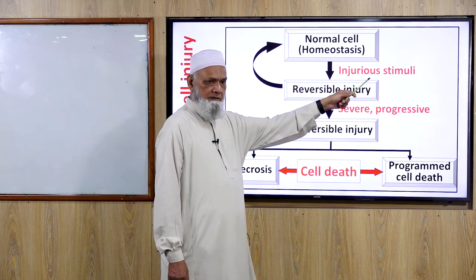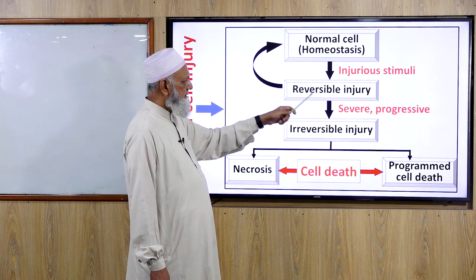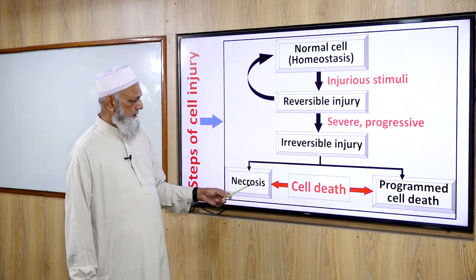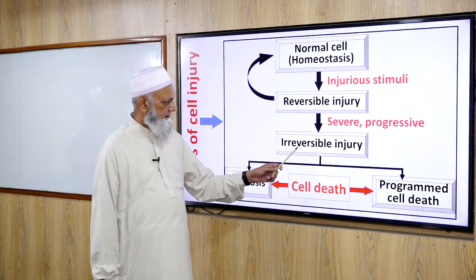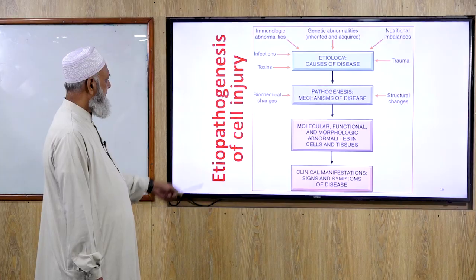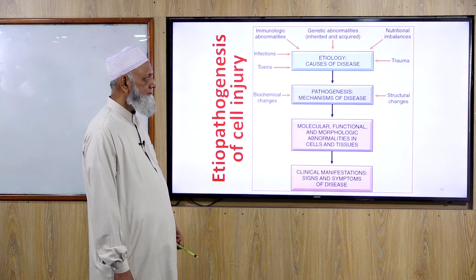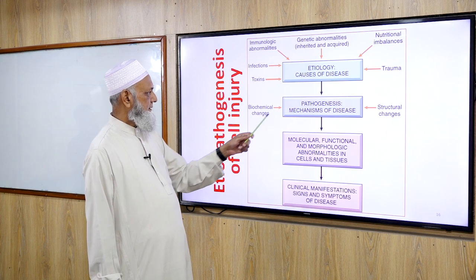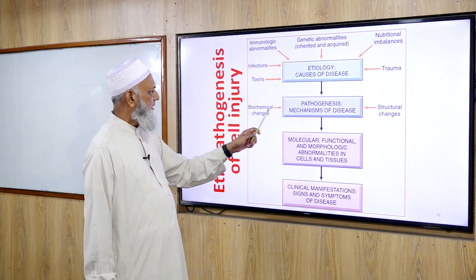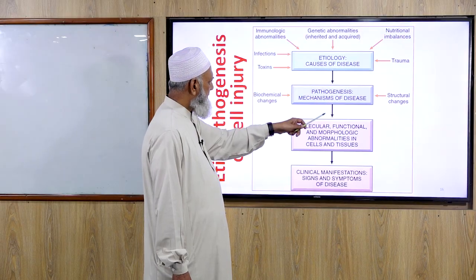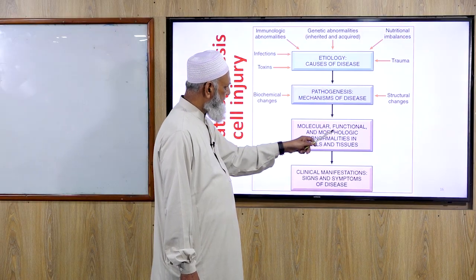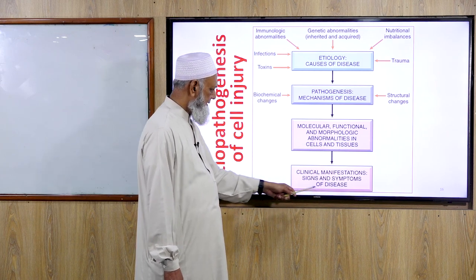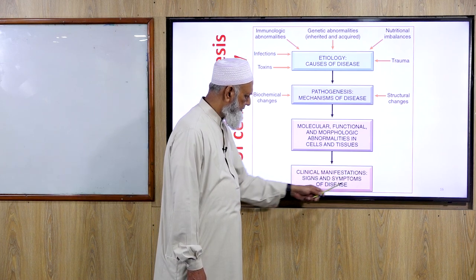When the injurious stimulus is withdrawn, cells revert to normal. If injured cells become severe and progressive, irreversible cell injuries result — necrosis and programmed cell death. Pathogenesis of cell injury: causative agents lead to pathogenesis or mechanism of disease, producing biochemical and structural changes, leading to molecular, functional, and morphological abnormalities in cells and tissues, and ultimately clinical manifestations — signs and symptoms of the disease.